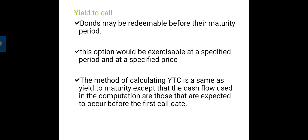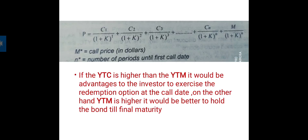The method of calculating yield to call is the same as yield to maturity. The cash flows used in the computation are those expected to occur before the first call date. The terminal value used is the call price, not the face value. The equation is: C divided by (1 plus k) raised to t, plus Call Price divided by (1 plus k) raised to N.